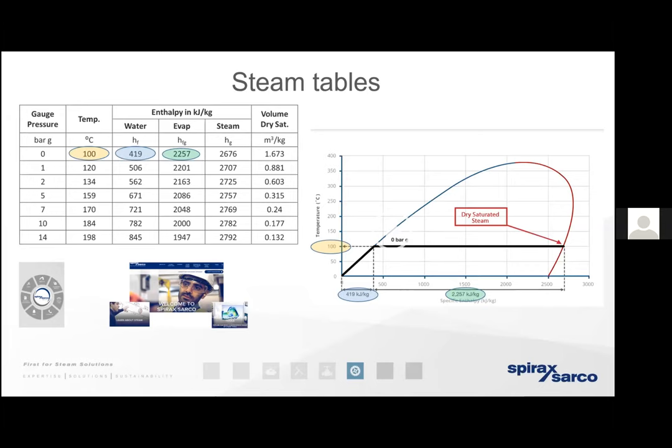The first column towards the far left is the pressure — that could be the pressure the steam is being generated at, distributed at, or condensed at in any heat exchanger. Taking the example of zero bar gauge, atmospheric conditions, the steam tables have their basis in the fact that water, which is the raw ingredient of a steam system, has a specific heat capacity of 4.19.